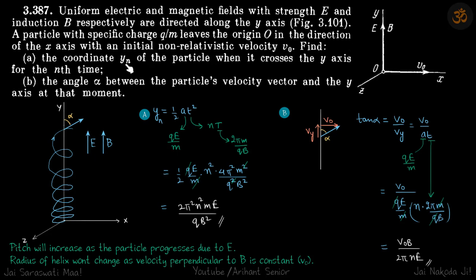We are asked the distance travelled by the particle on y axis when it crosses the y axis for the nth time and the angle made at that time between the y axis and the velocity vector.